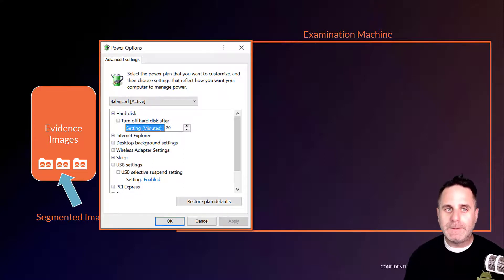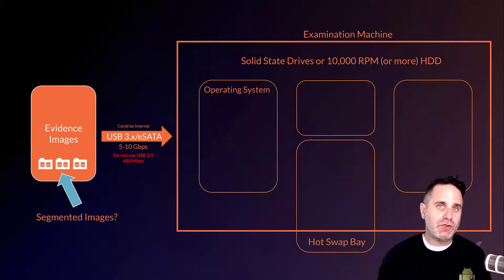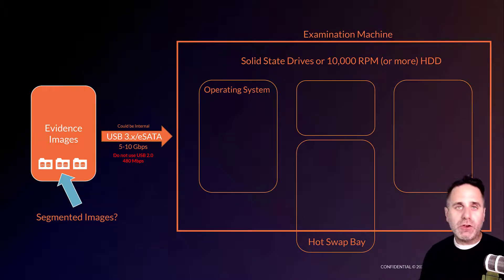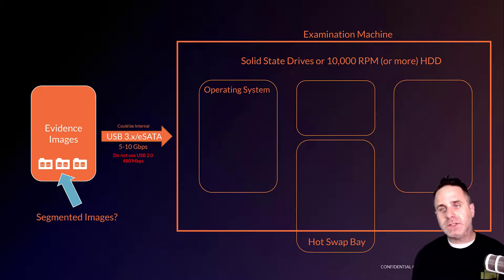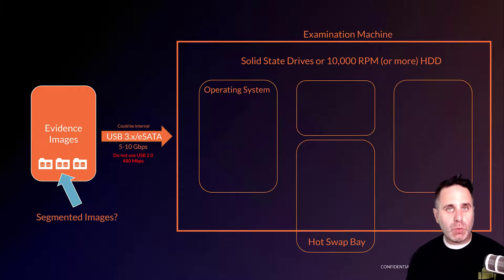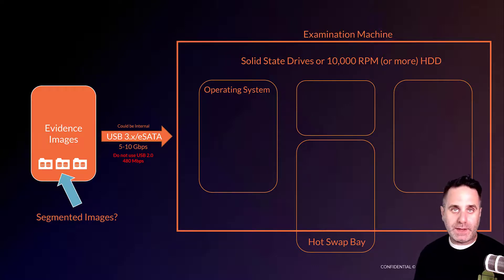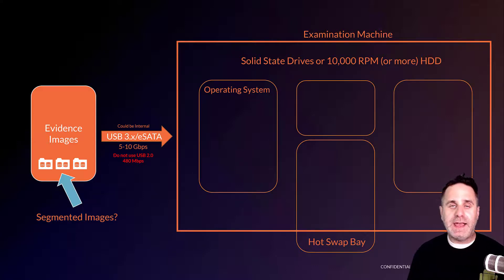Let's look at some of the drives and the way we can configure our install within our examination machine. You should really try to get solid state drives as they are the quickest. Or if you are going to go with spinning hard drives, you want to start with 10,000 RPM drives if you can. If you can't get 10,000, there's 7,500, but you shouldn't go any lower than that. You should avoid things like Western Digital Green drives as they are scaled down even more for power settings.